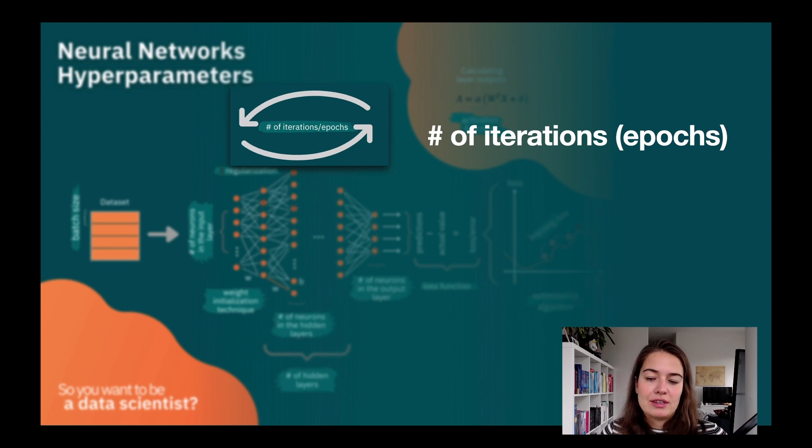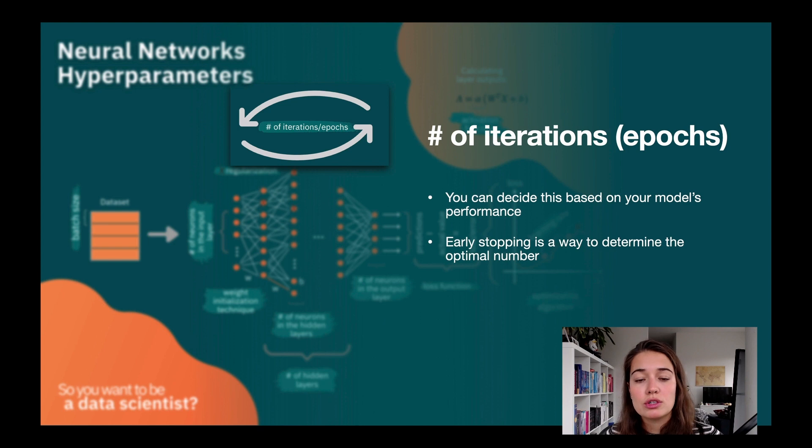Number of iterations is something that we already talked about in the exercise. So this will be something that will depend on your network specifically. You can use early stopping to decide when you should stop. Because the more you show your model your data, the more it's going to learn. And of course, after some point...